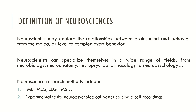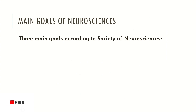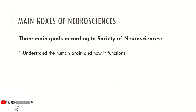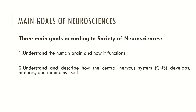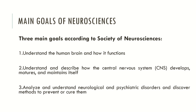Now let's look at the main goals of Neurosciences according to the Society of Neurosciences. The first goal is to understand the human brain and how it functions. The second goal is to understand and describe how the central nervous system develops, matures and maintains itself. The third main goal is to analyze and understand neurological and psychiatric disorders and discover methods to prevent or to heal them.